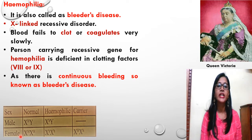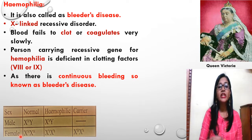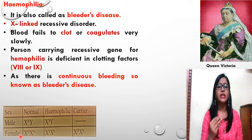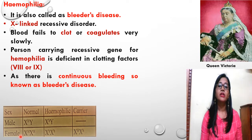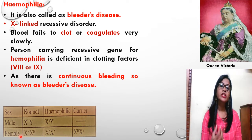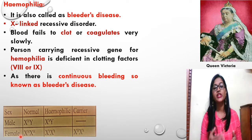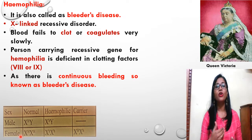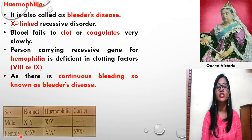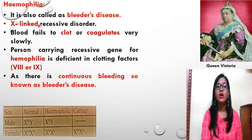This impairs the body's ability to make blood clots — a process needed to stop bleeding — and this results in people bleeding for a longer time after an injury. There is also increased risk of bleeding inside the joints or in the brain. Those with a mild case may have symptoms only after an accident or during surgery. These are the symptoms present in people who suffer from Bleeder's Disease or Haemophilia.